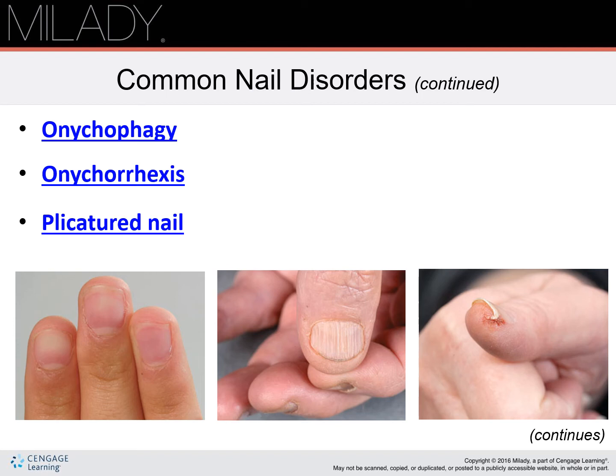Folded nail is a highly curved nail plate often caused by injury to the matrix, but may be inherited. This often leads to ingrown nails.